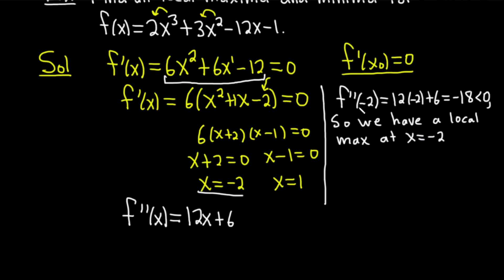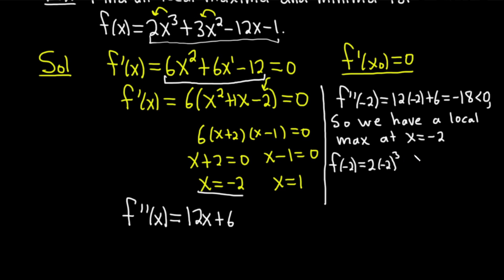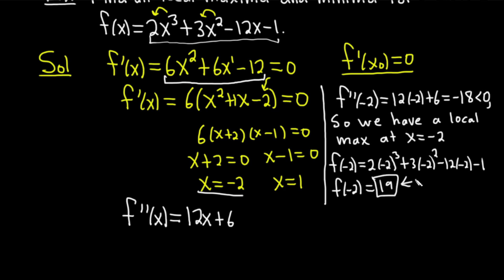Because the second derivative is negative at negative 2, we have a local maximum at x equals negative 2. To find the actual maximum value, we plug negative 2 back into the original function: f of negative 2 equals 2 times (negative 2) cubed plus 3 times (negative 2) squared minus 12 times (negative 2) minus 1, which works out to 19. So the local maximum value is 19.